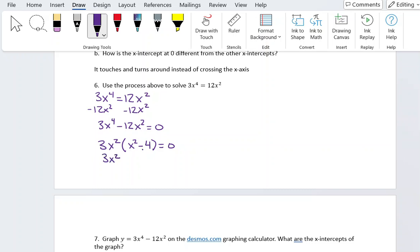Next I'm going to factor this set of parentheses. What number multiplied by itself gives me 4? That would be 2. So x minus 2, x plus 2.